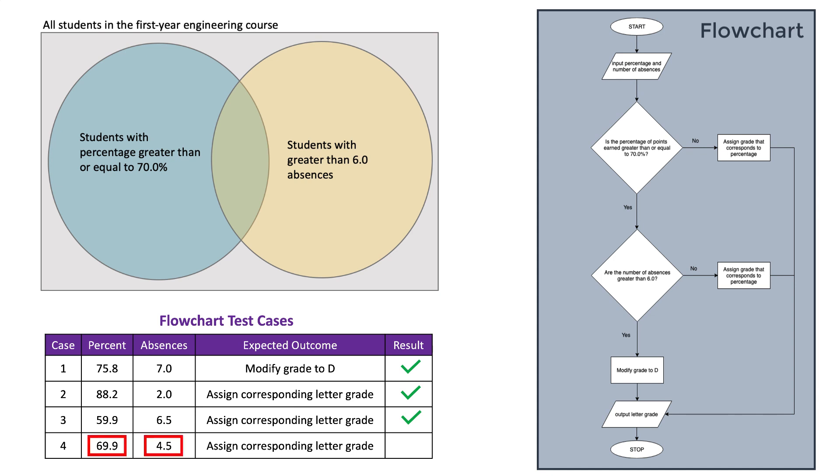Finally, for case 4, the inputs are 69.9% and 4.5 absences. For the first decision, is the percentage of points earned greater than or equal to 70%? The answer is no, so I move to the right and assign the grade that corresponds to the percentage. Even though this is a separate case in the Venn diagram, notice that it really is a repeat of case 3's path in the flowchart. When testing a flowchart, it is only necessary to take each path one time, so only one of case 3 or 4 was needed. That being said, it never hurts to test more cases than you need.